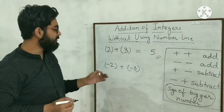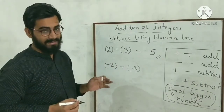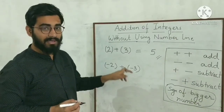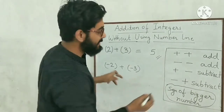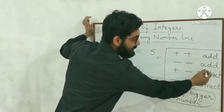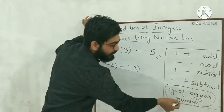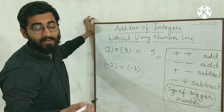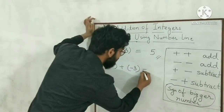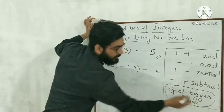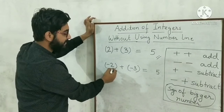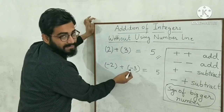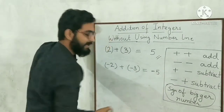If you want to add minus 2 and minus 3: if both numbers are negative, simply add them and put the sign of the bigger number. 2 plus 3 equals 5. The bigger number is 3 which has a negative sign, so the answer is minus 5.